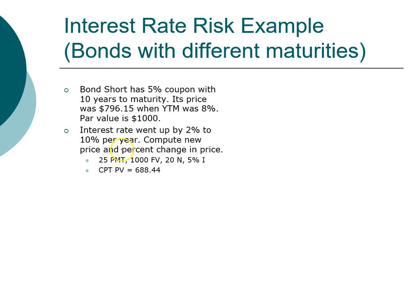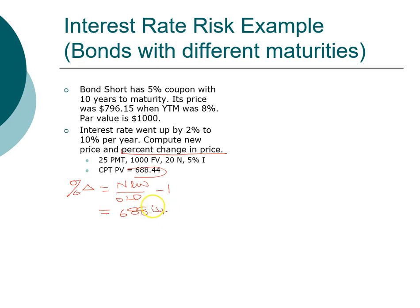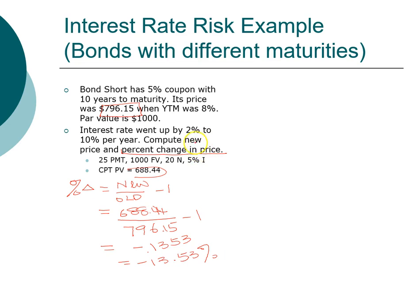Next, we compute the percentage change in price. The percentage change equals the new value divided by the old value minus 1. The new price is $688.44 divided by the old price of $796.15, minus 1, which equals negative 0.1353. So the price of the bond went down by 13.53% when the interest rate went up by 2%.